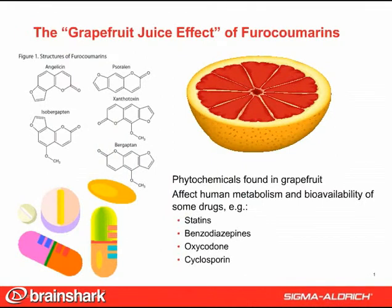Furocoumarins are a class of defensive phytochemicals found in grapefruit. They comprise a furan ring fused with coumarin. They are a problem because in humans they affect the metabolism and bioavailability of a number of drugs. This has been called the grapefruit juice effect.